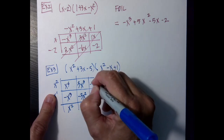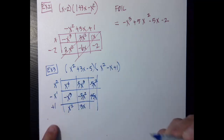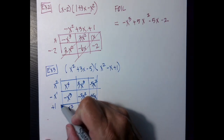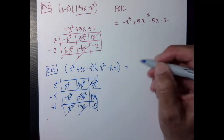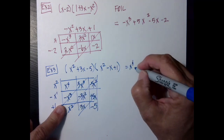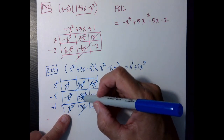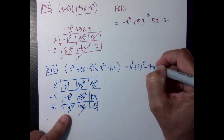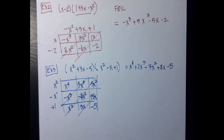This is negative 5x squared. This is positive 5x because I have a negative and a negative. And then I have negative 5. Notice again that my like terms are along the diagonals. So the product is going to be x to the 4th. I have positive 3 minus 1 is plus 2x to the 3rd. I have negative 5 and negative 3 is negative 8, plus 1 is negative 7x squared. 5 plus 3 is 8x. And then I have negative 5.